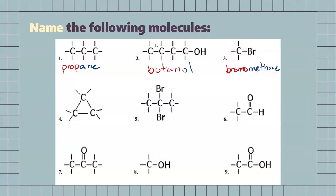Our next one, we have three carbons in a circle. So, just like our one before, it is going to be a propane, but to be more specific, since it's in a circle, we're going to call it cyclopropane.